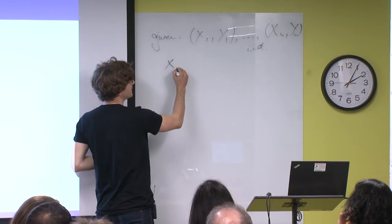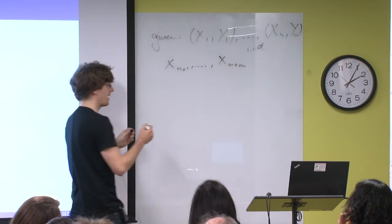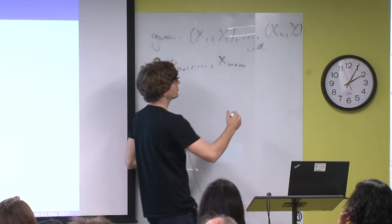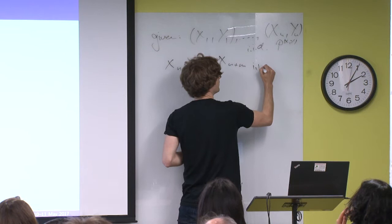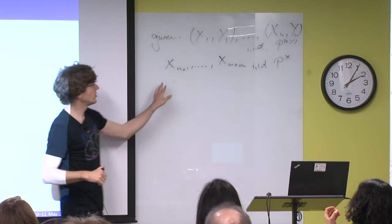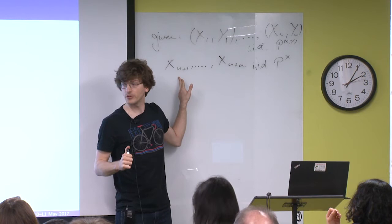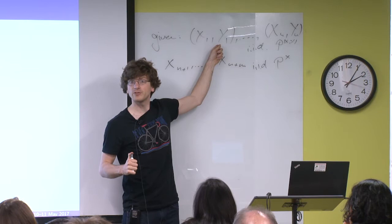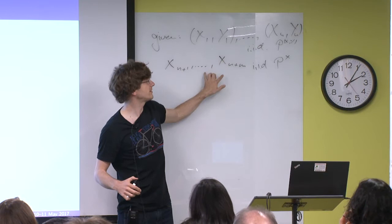You have m additional data points from x that are also i.i.d. from the marginal distribution p(x). The question is: can we somehow use these unlabeled data points — pictures where we don't know whether there is a lion or not — to improve our prediction in the original problem? This is called semi-supervised learning. Here we are supervised, and here we are unsupervised.